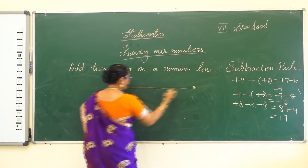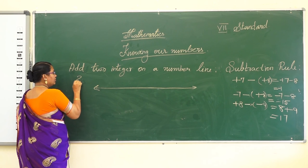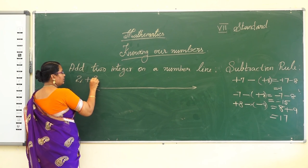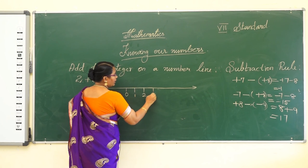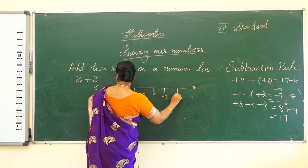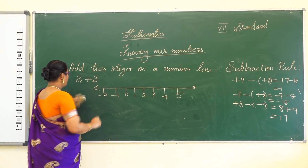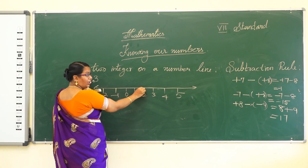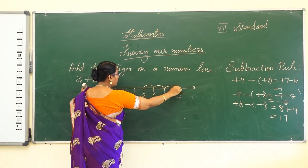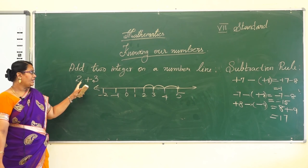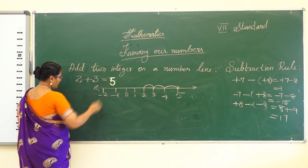First draw the number line with 0, 1, 2, 3, 4, 5 and -1, -2. For 2 + 3: start from 2, then move 3 steps to the right — 1, 2, 3 — and you land on 5. So 2 + 3 = 5 on the number line.